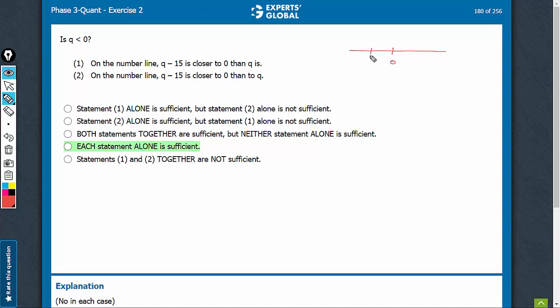So imagine if q were negative, q minus 15 would be even more negative and q would be between q minus 15 and 0. So q minus 15 can never be closer to 0 than q is, which means, in other words, q cannot be negative.